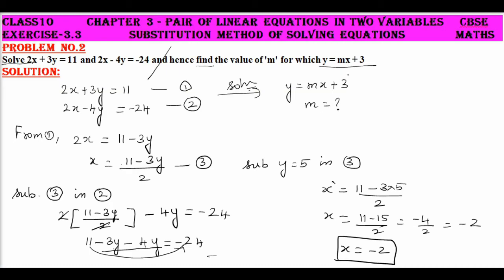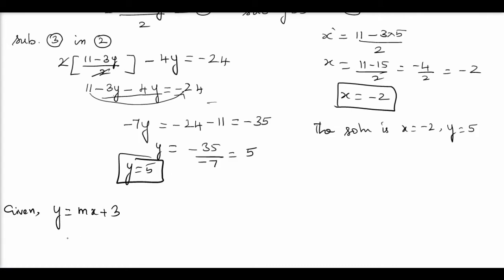Next part of the problem is that you are given y equals mx plus 3. Now we have found the values of x and y. y is 5 and x is minus 2. So let me simplify. I get 5 minus 3 equals minus 2m, that is minus 2m equals 2. So m equals minus 1 as the answer. So we have substituted the values of x and y in y equals mx plus 3 and got the value of m.